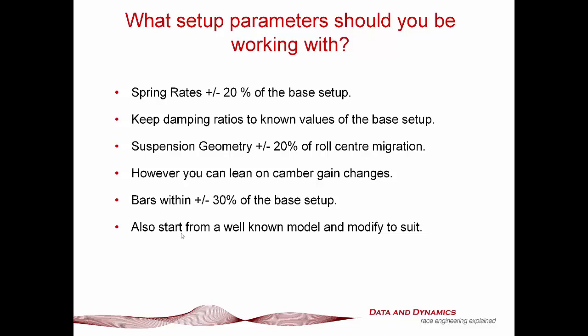Suspension geometry — again, like with spring rates, plus or minus 20% of the roll centre migration. That being said, if you're playing around with different suspension geometry configurations to make sure that the camber gain in braking and cornering is sensible, this is actually something you can lean on quite a bit. I can't speak for my competitors, but the stuff in Chassis Sim has been validated on the KNC rig, so this is something you can be quite aggressive on. Bars: within plus or minus 30 degrees or 30% of the base setup.